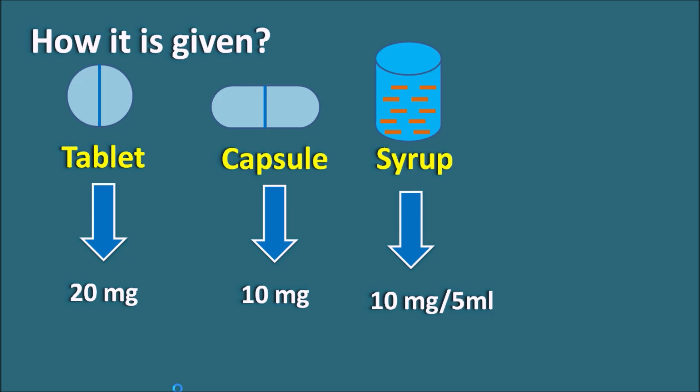Dicyclamine is an anticholinergic and antispasmodic particularly indicated for irritable bowel syndrome. This drug inhibits muscarinic receptors on the GI smooth muscle, thereby reducing GI motility and relieving symptoms of irritable bowel syndrome. Since this drug is an anticholinergic, it can produce blurred vision, dry mouth, and constipation as important side effects. It can also cause central side effects like dizziness and drowsiness, and cardiovascular side effects like tachycardia and palpitations, all of which should be carefully monitored when Dicyclamine is used for longer periods.